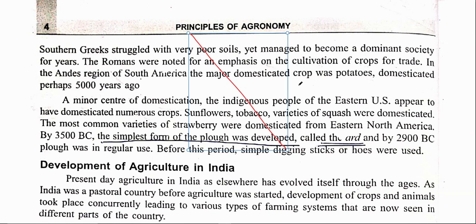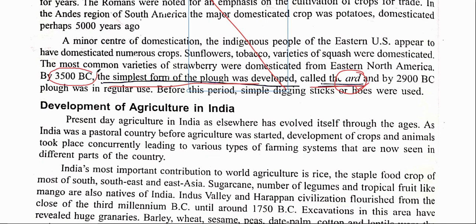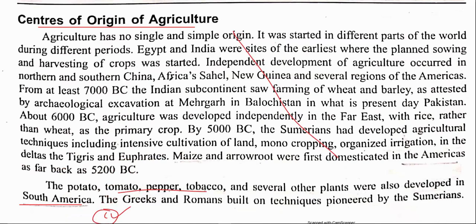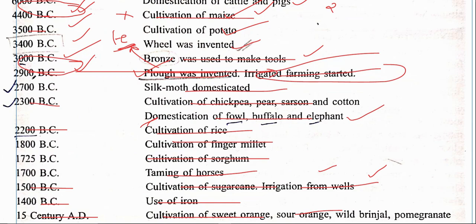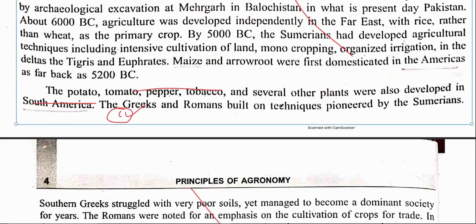One important point here: the simplest form of plow is called ARD (A-R-D), and it evolved by 3500 BC. The first plow, as mentioned in the earlier table, was invented in 2900 BC. Remember the difference: ARD is the simplest form (3500 BC), and the first plow was used in 2900 BC.